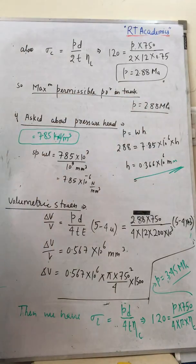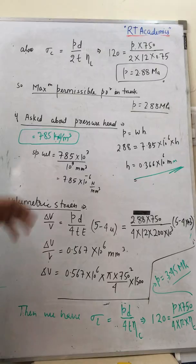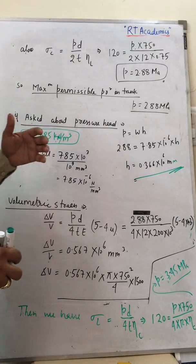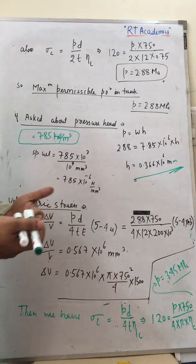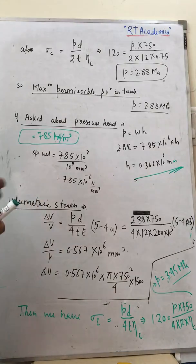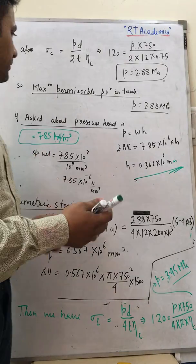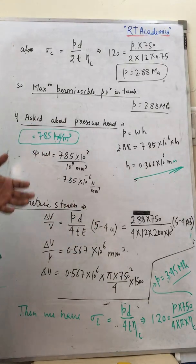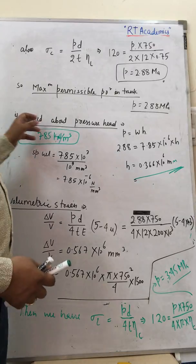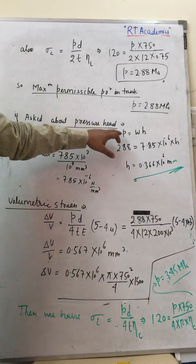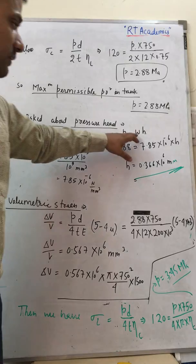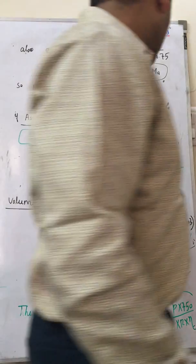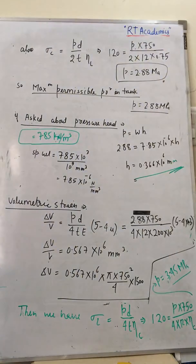Now, if we are asked to calculate the pressure, we need the density and specific weight of the liquid. The pressure is given by p = w × h, where w is the specific weight and h is the height of the liquid column.